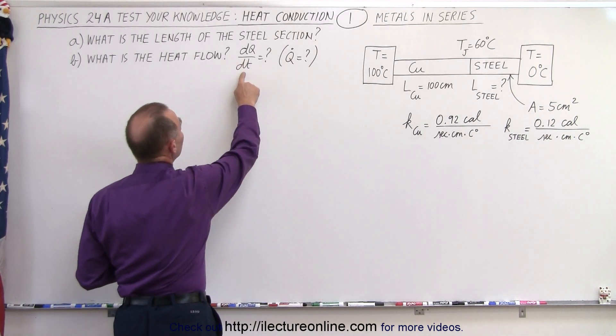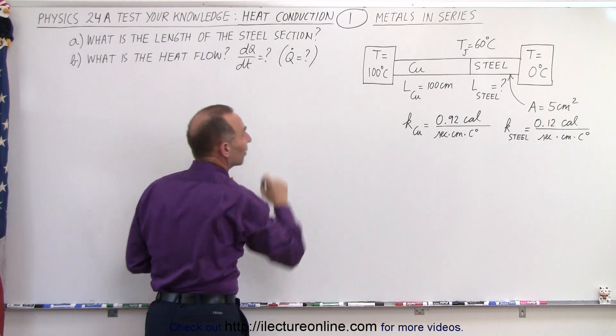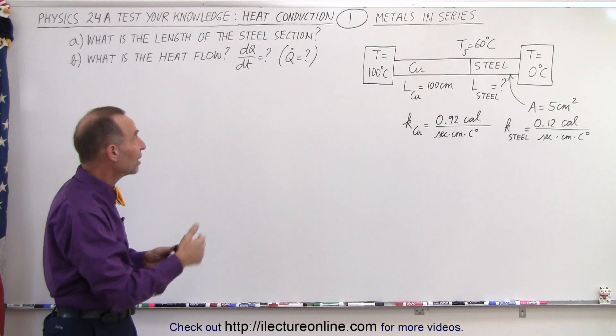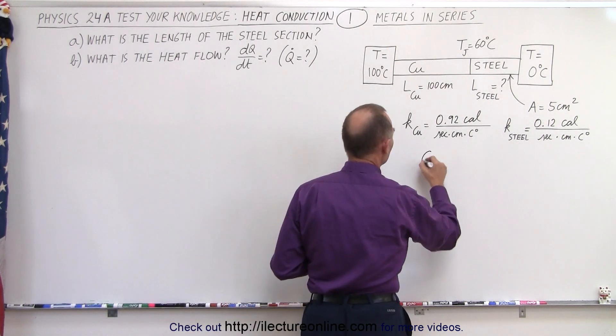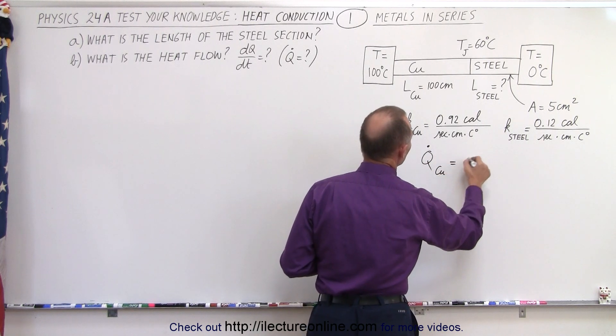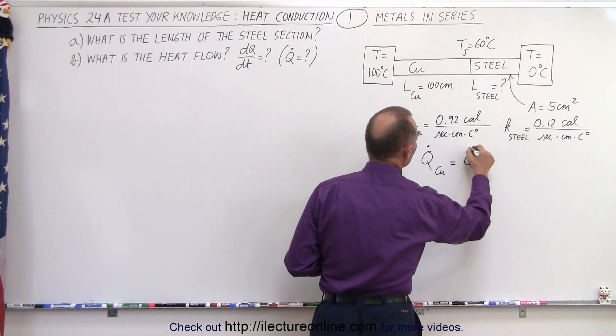Notice we can write dq/dt like this, or we can write it with a dot on top, because that's the meaning of q dot. So we can say that the q dot through the copper is equal to the q dot through the steel.